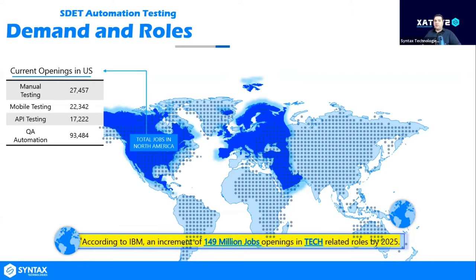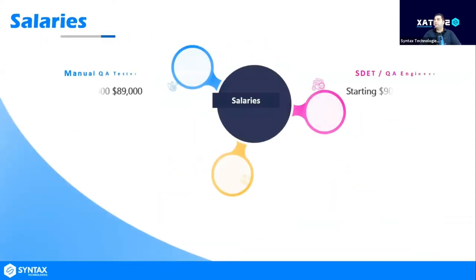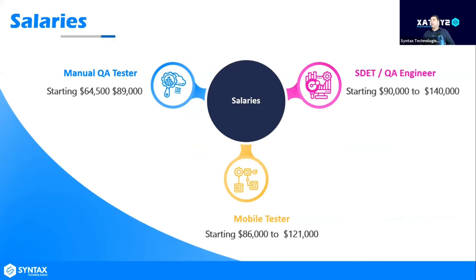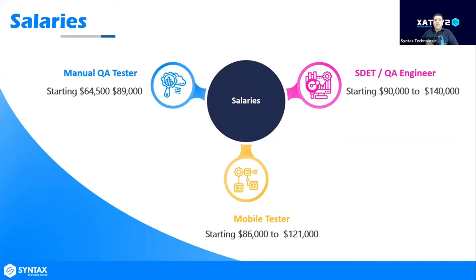There's a huge demand nationwide in the USA and globally. But what does it pay? Manual testers start anywhere from $64,000 to $89,000. QA engineer automation testers can make anywhere from $90,000 to $140,000 depending on experience. Mobile testing goes anywhere from $86,000 to almost $121,000. These are high-paid salaries because it's a skill set with huge demand.